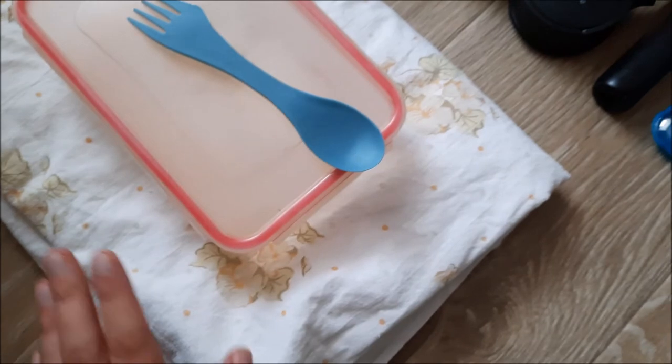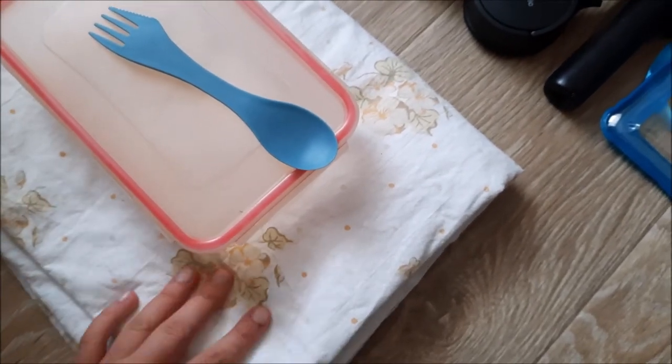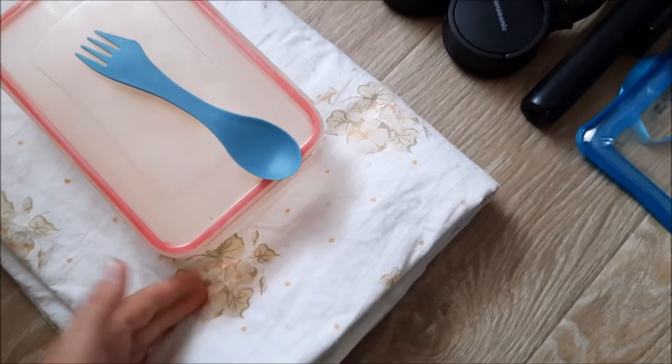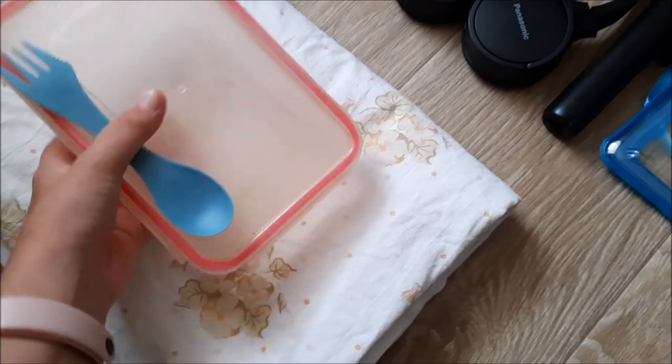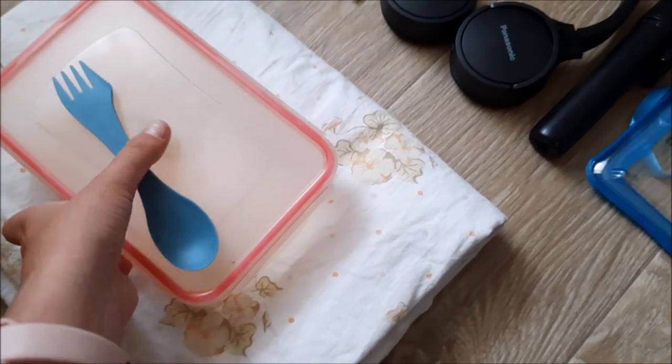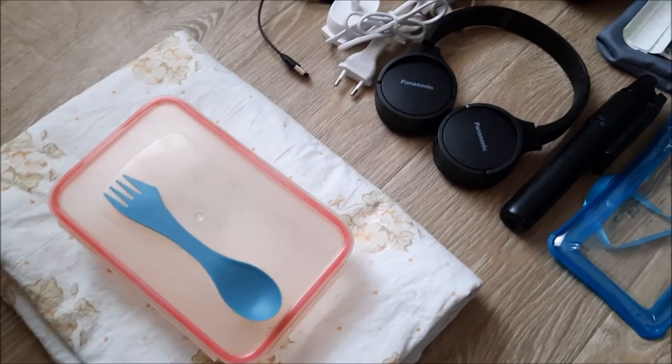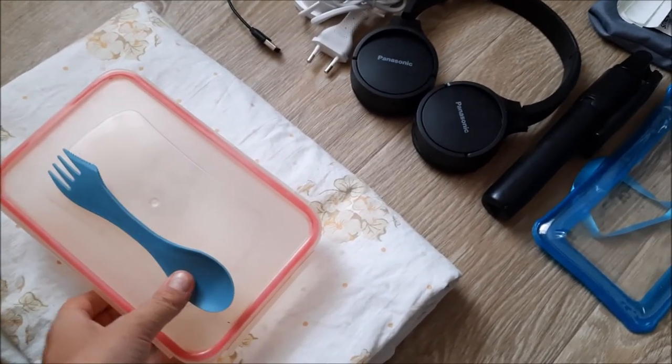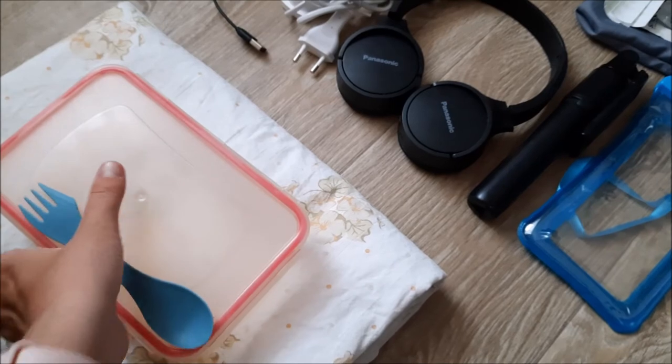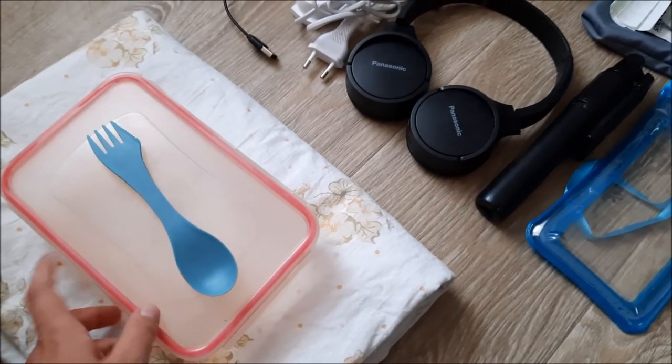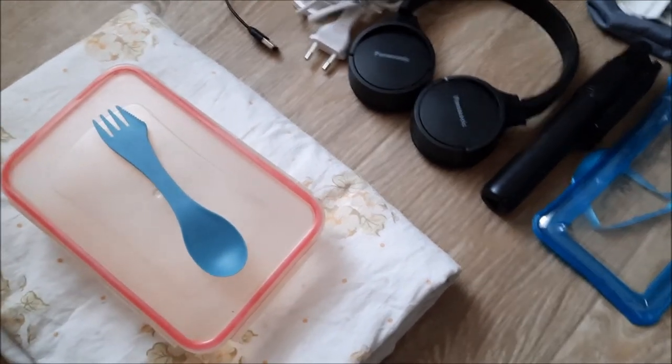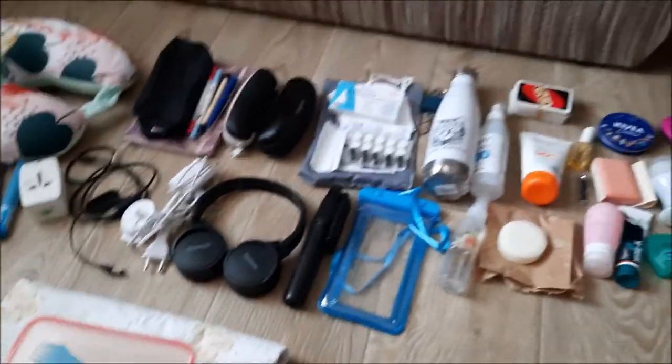And then the other things that I'm bringing if I have space is this light blanket, beach blanket, as well as spork and food container. I plan on cooking because Europe is really expensive especially during summer, so I plan on cooking. And if I don't need it, it's like an old container so if I don't need it I will just throw it out.